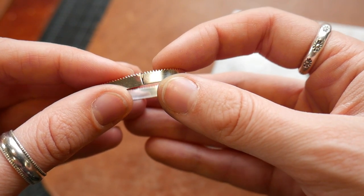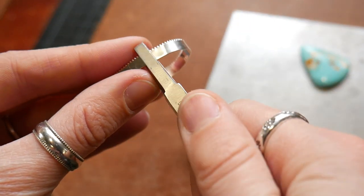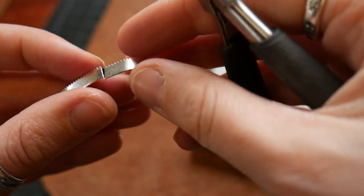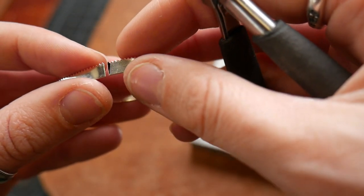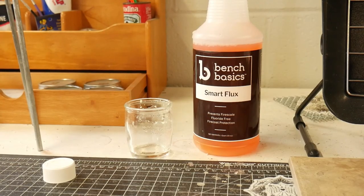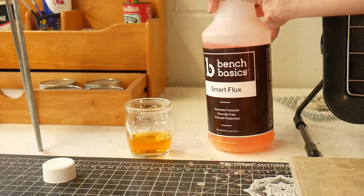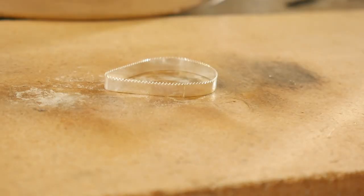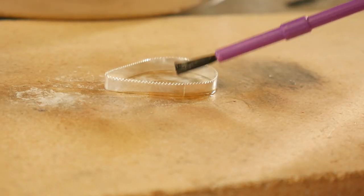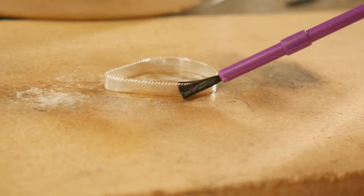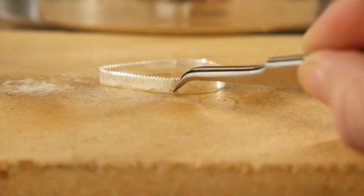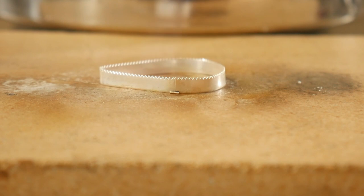Now I want to make sure that the two ends are flush before I solder them together. What I like to do is work harden the two ends using my flat nose pliers. Now using my Bench Basic Smart Flux, I'm just going to apply a little bit of flux to that seam. I'm then going to take a small piece of hard solder and place it right in between the seam.